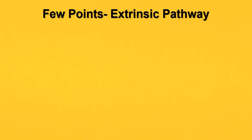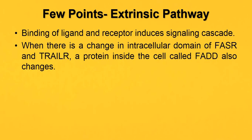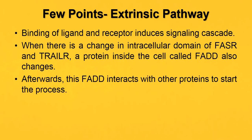Binding of ligand and receptor induces the signaling cascade. When there is a change in the intracellular domain of the FAS receptor and TRAIL receptor, the protein FADD inside the cell also changes. After FADD changes, it interacts with other proteins to start the process. This is how the effector caspase gets activated. Once effector caspase 3 is activated, it leads to cell death. Remember that caspase 3 exists in a pro-caspase form and must be cleaved before it can act to cause programmed cell death.